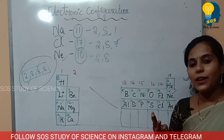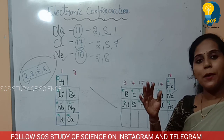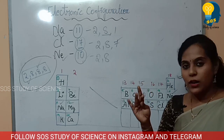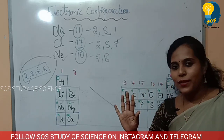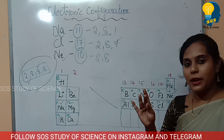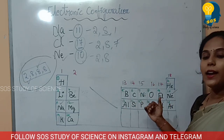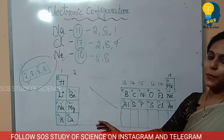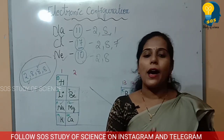Let's revise the first 20 elements: hydrogen, helium, lithium, beryllium, boron, carbon, nitrogen, oxygen, fluorine, neon — that's 10. Then sodium, magnesium, aluminium, silicon, phosphorus, sulfur, chlorine, argon, potassium and calcium. Memorize all 20 elements. For any question, you will be able to write the answer.